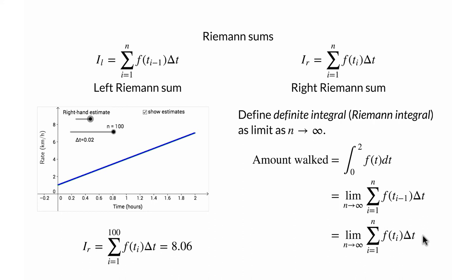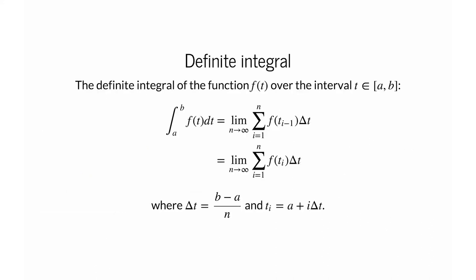The definite integral is a single number. For this example, we expect the definite integral to be 8 kilometers. We are integrating from 0 to 2 — you walked for a total of 2 hours. The entire interval has length 2, and the length of each sub-interval delta t is 2 divided by n. In general, for the integral of a function over an interval from a to b, the length of each sub-interval is b minus a divided by n, and the endpoints are given by t sub i equals a plus i times delta t.